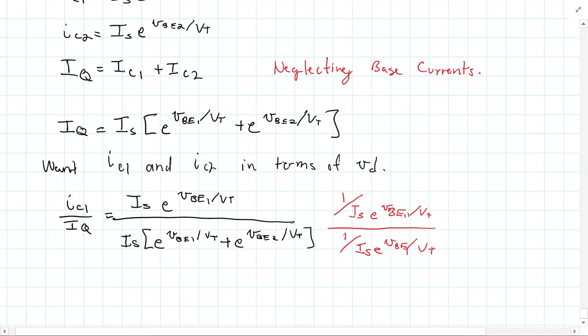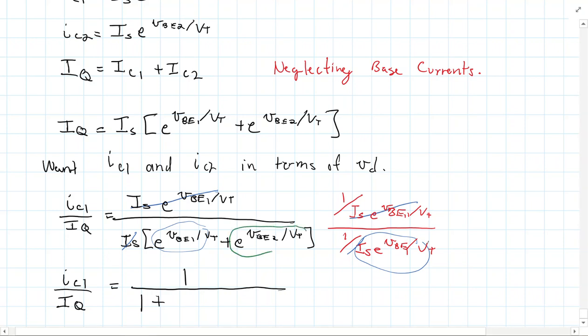And so what that's going to do for us here is we're going to get this entire numerator cancelled with that. The IS's are going to cancel. But then this here with this is going to get me a 1. So what I end up with is IC1 over IQ is 1 divided by 1 plus, and then I'm going to be doing this here divided by this. And remember, when you divide things, what do you do to the exponents? You subtract them.